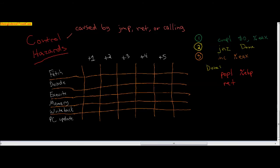Next, we move to control hazards. These are caused by jump instructions, returns, or calling a function. If we look at what's going on over here and pass these instructions through our pipeline, one would go in the fetch stage, then one would move to decode and two would move to fetch, and one would move to execute, two would move to decode, and three would move to the fetch stage.